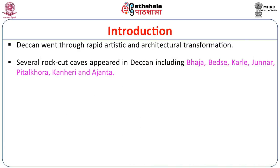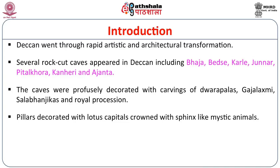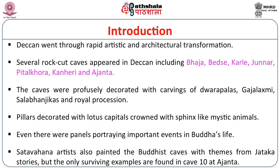Several rock-cut caves appeared in the Deccan including Baja, Betse, Karle, Junnar, Pithatkhora, Kanheri and Ajanta. The caves were profusely decorated with carvings of Dwarapalas, Gajalakshmi, Salabha Anjigas and royal processions, just like any other temple wall. Pillars were decorated with lotus capitals crowned with sphinx-like mystic animals — many resemble the Ionic or Doric pillars of Greek classical architecture. There were also panels portraying important events in Buddha's life from the Jataka stories, the only surviving examples of which are found in Ajanta.